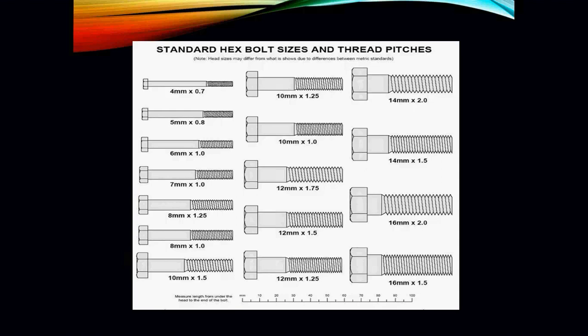Note that head sizes may differ from what is shown due to the differences between your metric and your standard sizes. You've got your 4mm by 0.7 thread, your 10mm by 1.25 thread — all different measurements out there. To measure bolt length, you measure from under the head to the end of the bolt. That gives you your size.